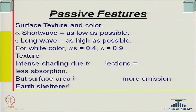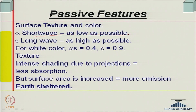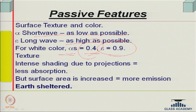Surface texture and color are very important. Short wave absorptivity should be as low as possible — the wall should absorb minimal radiation — but long wave emissivity should be as high as possible so that at night it radiates as much as possible. For a white surface, alpha equals 0.4, meaning short wave absorptivity is 40 percent, but its long wave emissivity is 0.9, so it emits out most of the heat.